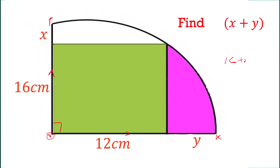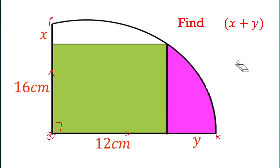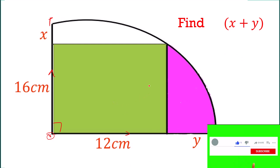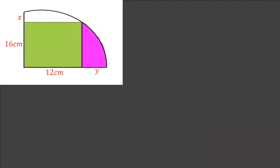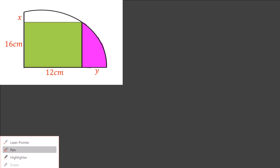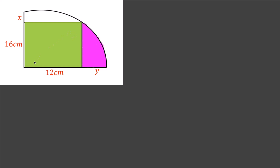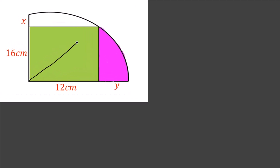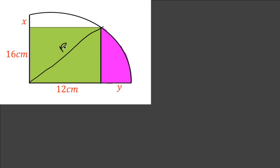For example, assuming the radius is 50, it would be 16 plus X equals 50, then you solve for X. Similarly, 12 plus Y equals 50. So we need to know the radius of this quadrant to get X and Y. Now, remember this figure is not drawn to scale. We know one side is 12 and the other side is 16.